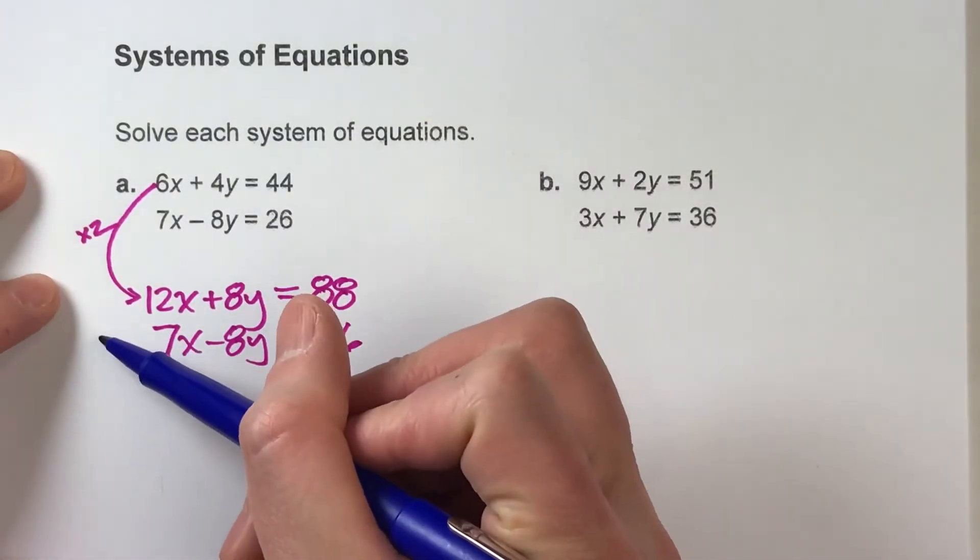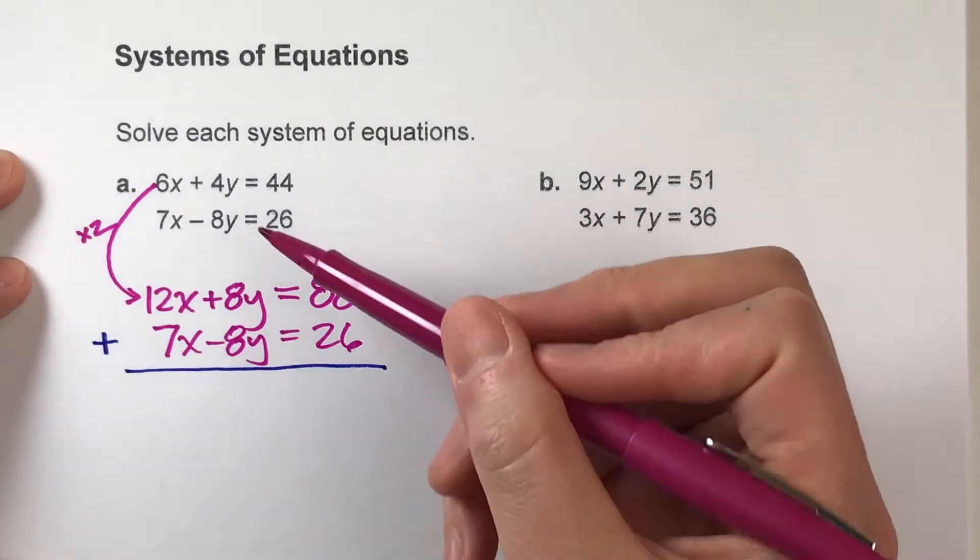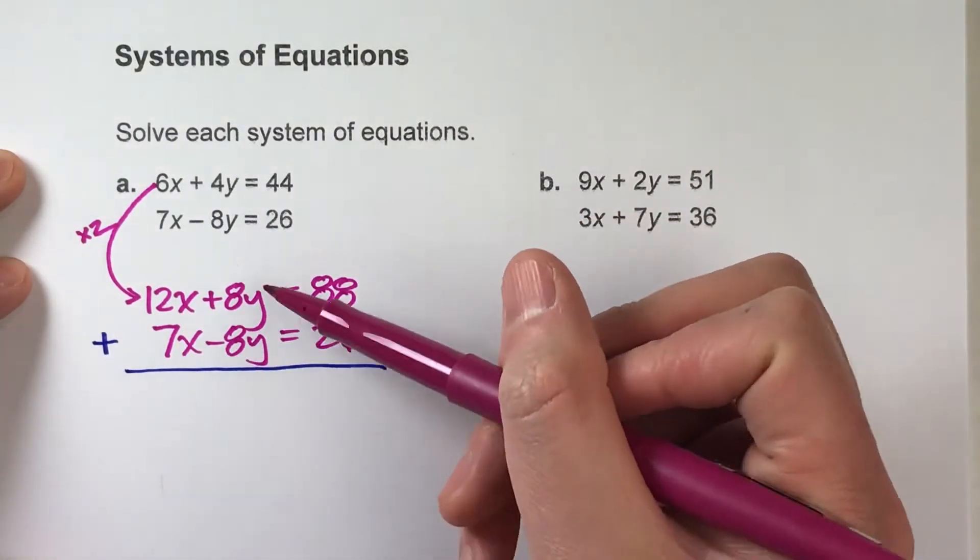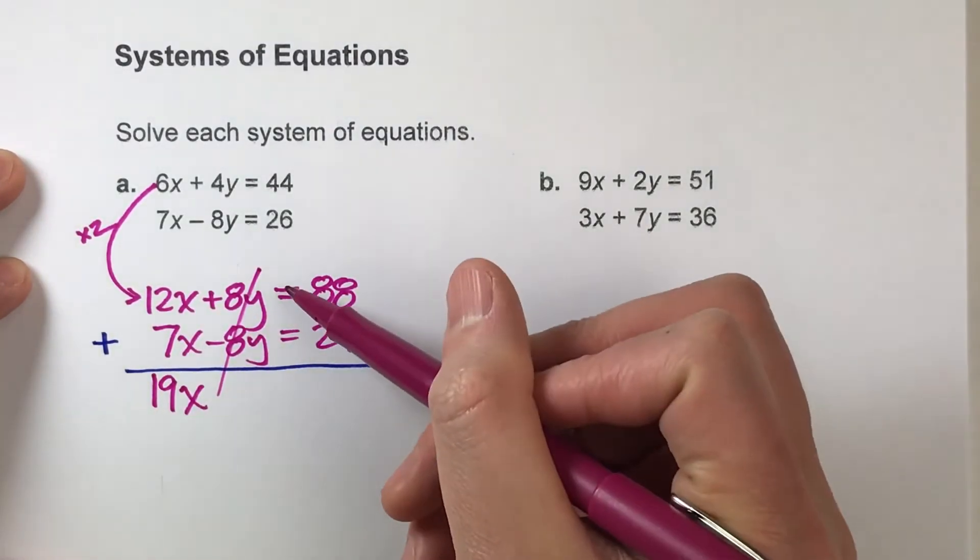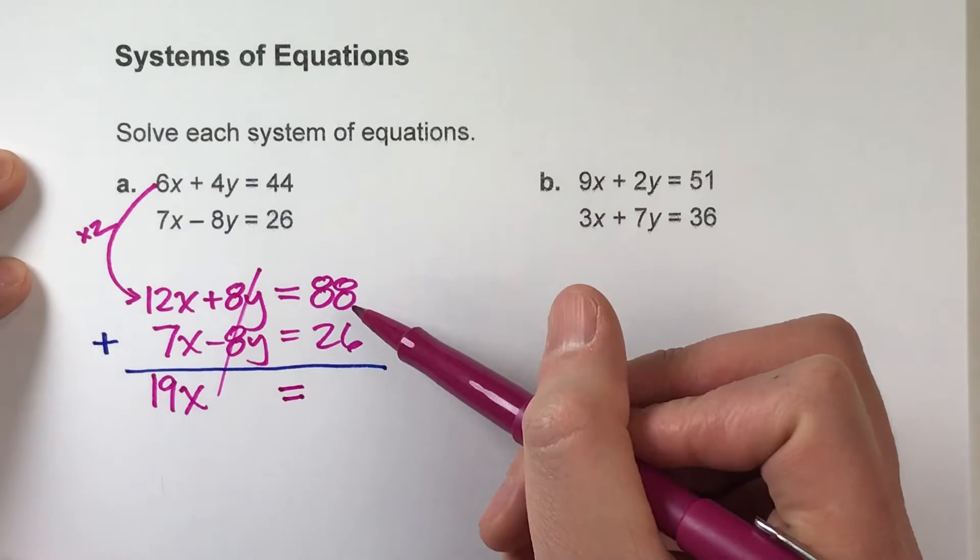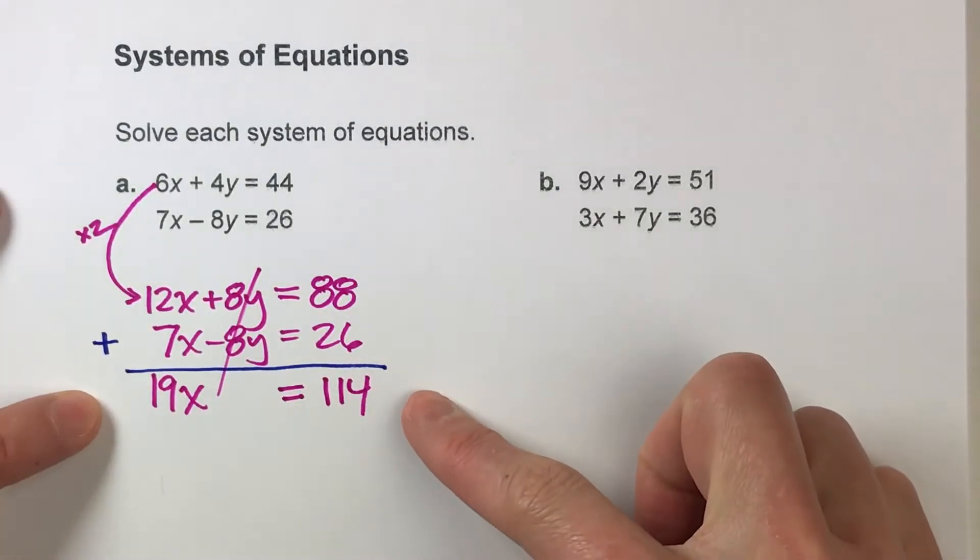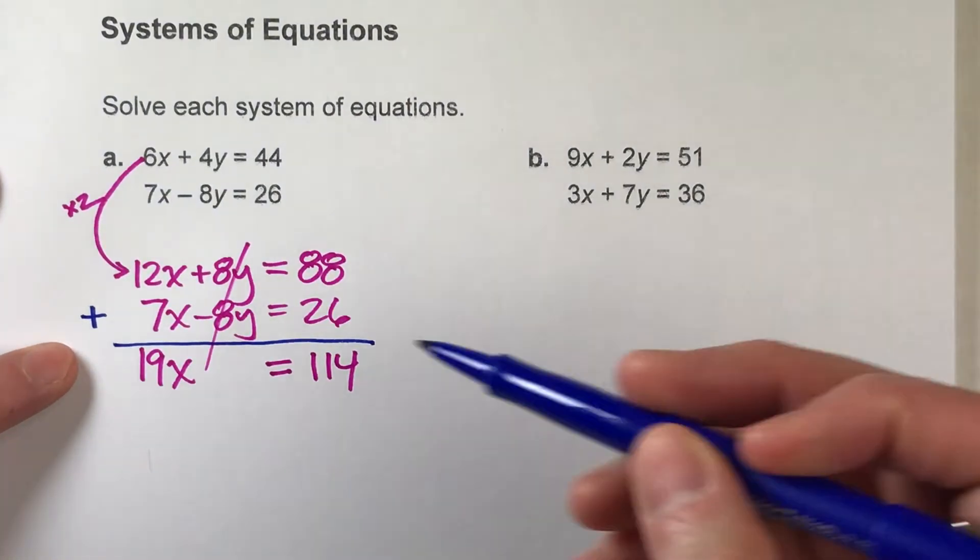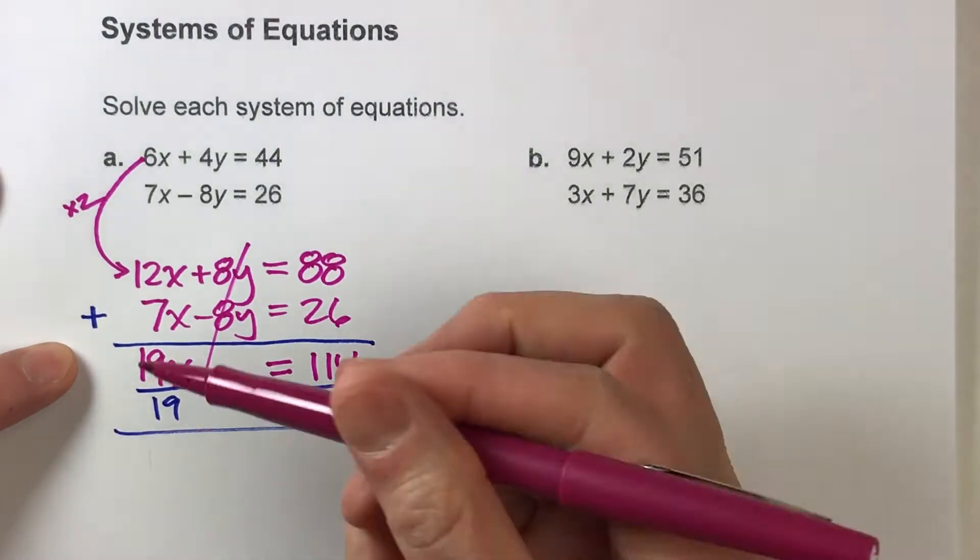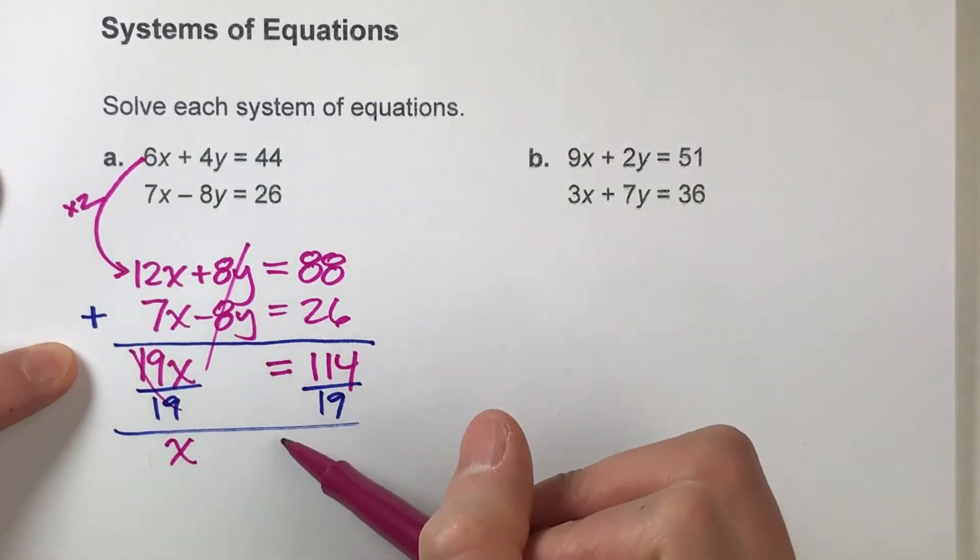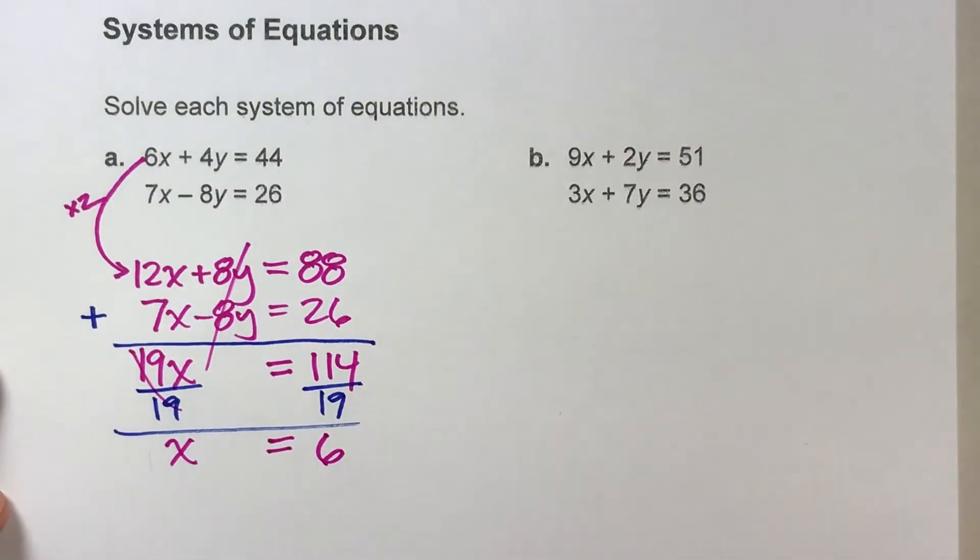I'm gonna add the two equations together, and when I do that, notice 8Y and negative 8Y will undo each other, but I'll end up getting 19X here. The equals drops down and 88 plus 26 is 114. I've completely eliminated the Y's, now I can solve for X. Divide both sides by 19, X equals 6.